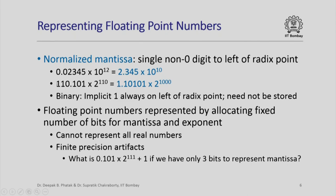Here is an interesting observation: if we are representing numbers in binary, we only have 0s and 1s. If we require a single non-zero digit to the left of the radix point, that digit must always be 1. So there is always a 1 on the left of the radix point in a normalized binary floating point mantissa. Because it is always going to be 1, we need not store it — we know it is always 1. This gives us one bit of information for free. However, there will be some difficulty representing the number 0, since the mantissa of 0 will have no bit that is 1, but we will see how to deal with this in a couple of minutes.